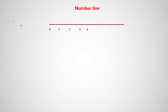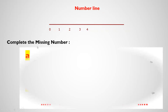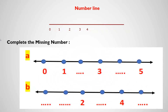Can you complete the following number line with me? Complete the missing number. Here in letter A, we have a line with some numbers and some missing. If we have 0 and 1, what is the missing number here? Yes, it's 2. Then 3, after 3 we have 4, and here is 5. Letter B: here we have 2 missing numbers. The first one is 0, after 0 is 1, here is 2, after 2 is 3, then 4, after 4 is 5.